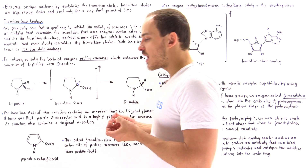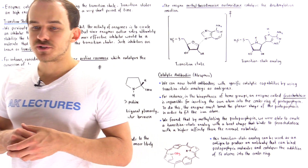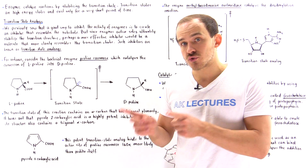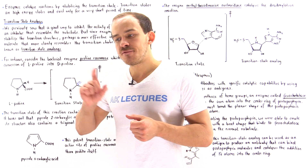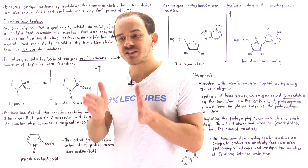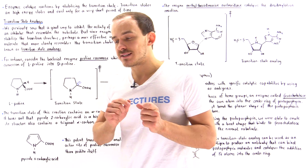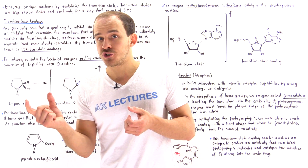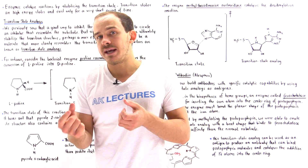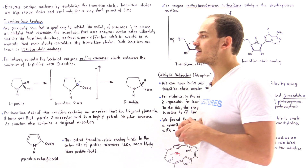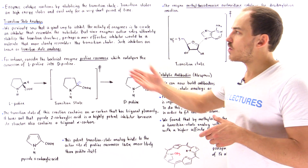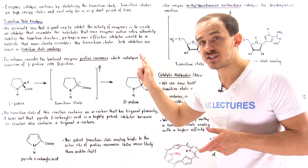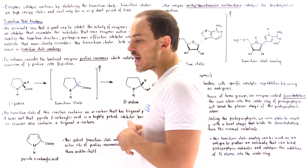Previously, we discussed different types of enzyme inhibitors. We said that a very good enzyme inhibitor is one that resembles the structure of the substrate. If the inhibitor of a particular enzyme resembles the structure of the substrate that binds into the active site, then because it has a similar shape, it can easily accommodate itself into the active site. So a good way to inhibit enzyme functionality is to create an inhibitor that resembles the natural substrate of that particular enzyme.